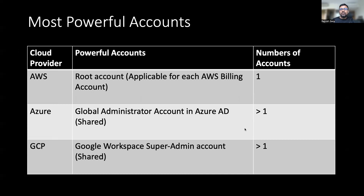Now let's look at the most powerful account for each cloud service provider. In AWS, it is named the root account. There can be only one AWS root account per AWS billing account — so if your organization has 50 AWS accounts within your AWS organization, you will have to manage 50 different AWS root accounts. On Microsoft Azure, your most powerful account is created within Azure AD and it is named the global administrator. You can have as many global administrator accounts as you want, but per Microsoft's recommendation, you shouldn't have more than five.